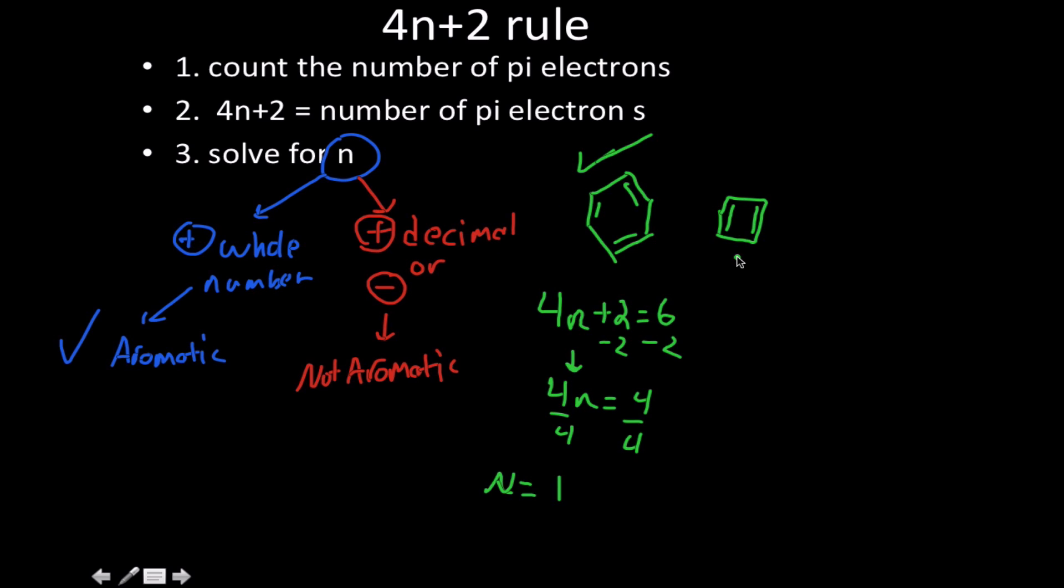And now let's compare that with cyclobutadiene. So with cyclobutadiene, how many pi bond electrons? Well, 2 and 4. So I plug that into my equation. I have 4n plus 2 is equal to 4.